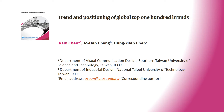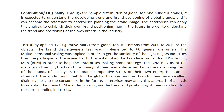Trend and Positioning of Global Top 100 Brands. This article is written by Rain Chen, Yohang Chen, and Hung Yun Chen. Through the sample distribution of global top 100 brands, this article aims to understand the developing trend and brand positioning of global brands, and it can become a reference to enterprises planning their brand image. Enterprises can apply this analysis to establish their own brand positioning map in order to understand the trend and positioning of their own brands in the industry.